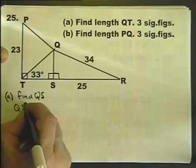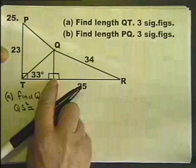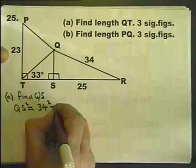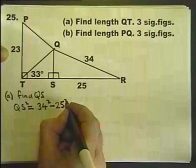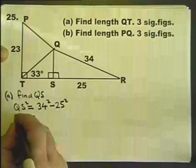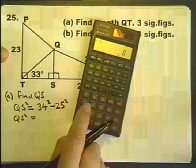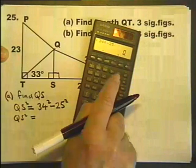We've got two sides, we want the third side. That's Pythagoras. So, QS squared, this distance squared, is the hypotenuse squared minus the other side squared.